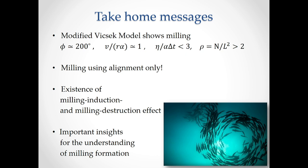So we have seen that this modified Vicsek model does show milling for intermediate field of view and when the ratio between speed and angular velocity is about 1, for low noise and for high enough density. This is indeed a case of milling using only alignment, which is the first model studying this. We also have seen the existence of milling induction and milling destruction effects, and all these are important insights for the understanding of milling formation, maybe also in real animal schools. Thank you.